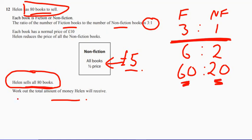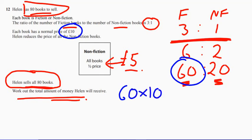So how much money does she have? Well, she sells all of the fiction books for £10. So 60 multiplied by 10. So this is the fiction part. So that's going to equal 600.